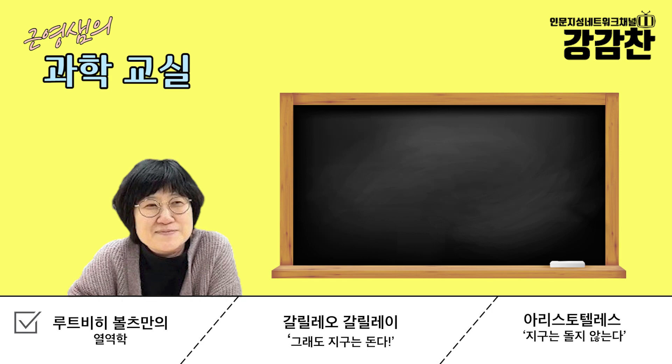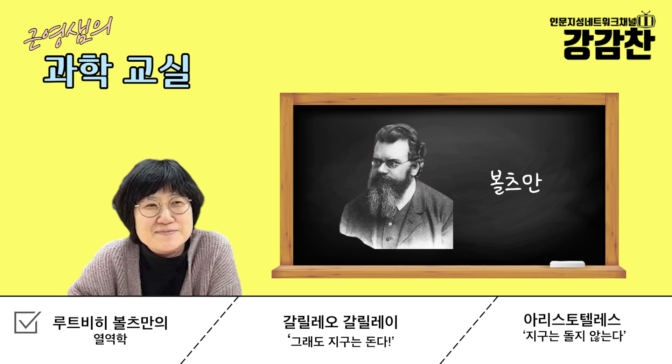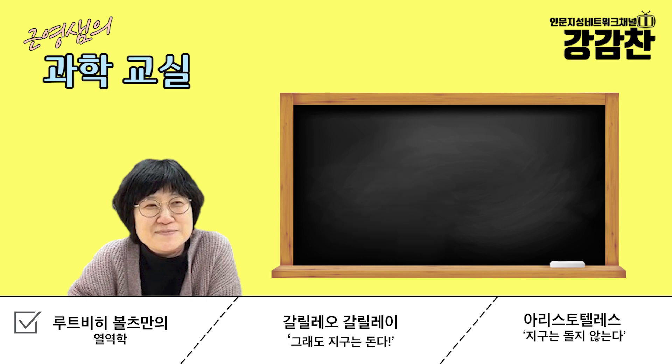이 기체 운동론을 다 설명해 주는 말입니다. 루트비히 볼츠만이 기체 운동론과 관련된 중요한 이론을 전개하는데, 핵심적으로 기억하셔야 될 게 바로 '통계역학'이라는 표현입니다. 통계역학에는 세 가지가 걸려 있어요. 통계, 열, 역학 세 가지로 나눠집니다.